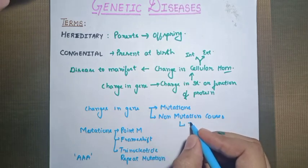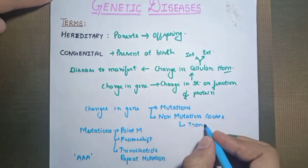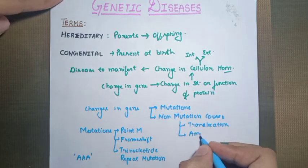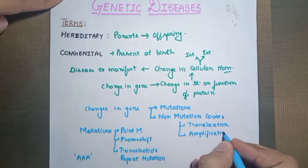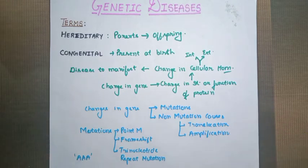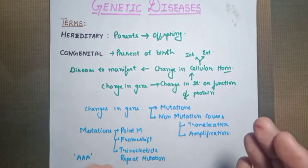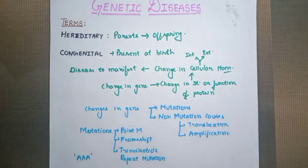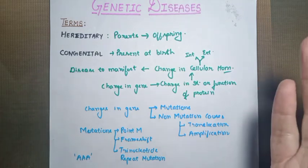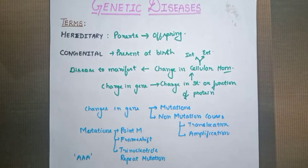Some non-mutation causes may include translocation of genes, amplification of a certain part of a gene, or other factors we will discuss in this chapter. So genetic disease may be due to change in the gene or genetic coding of a cell, which leads to a change in the structure or function of a protein, which in turn leads to a change in cellular homeostasis and the disease manifesting. These changes may arise from mutation causes or non-mutation causes such as translocation or amplification.